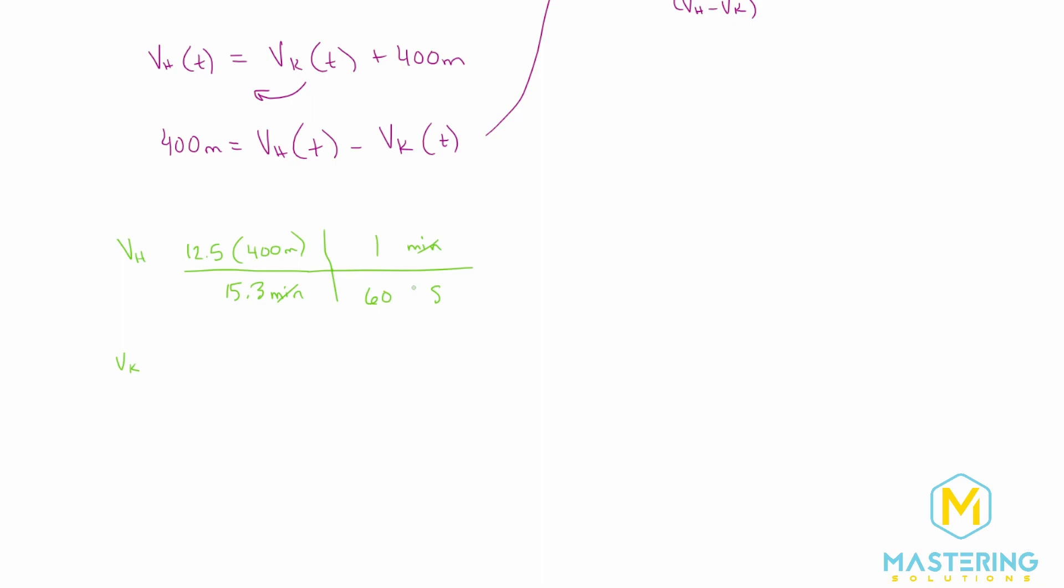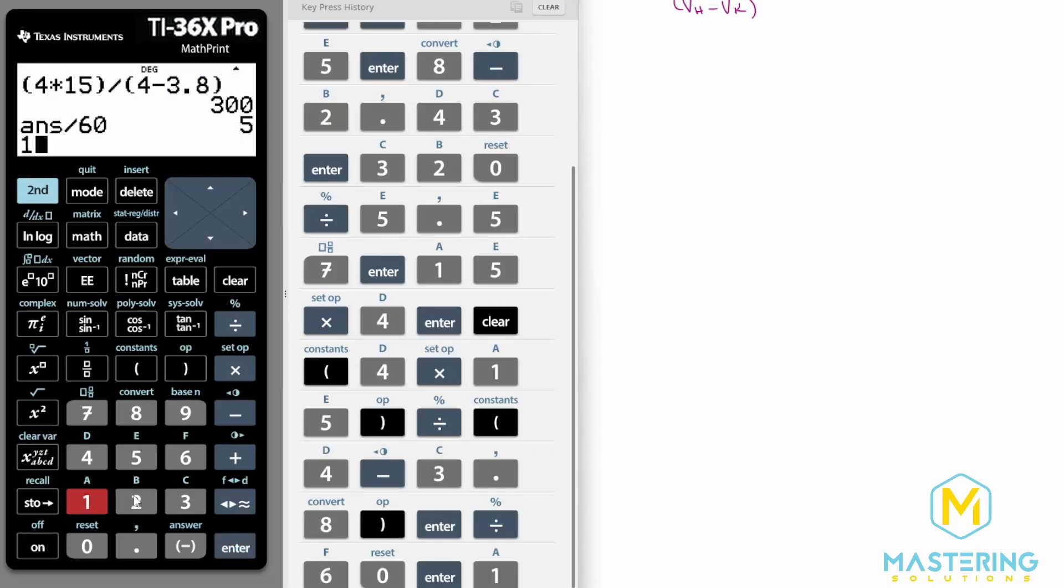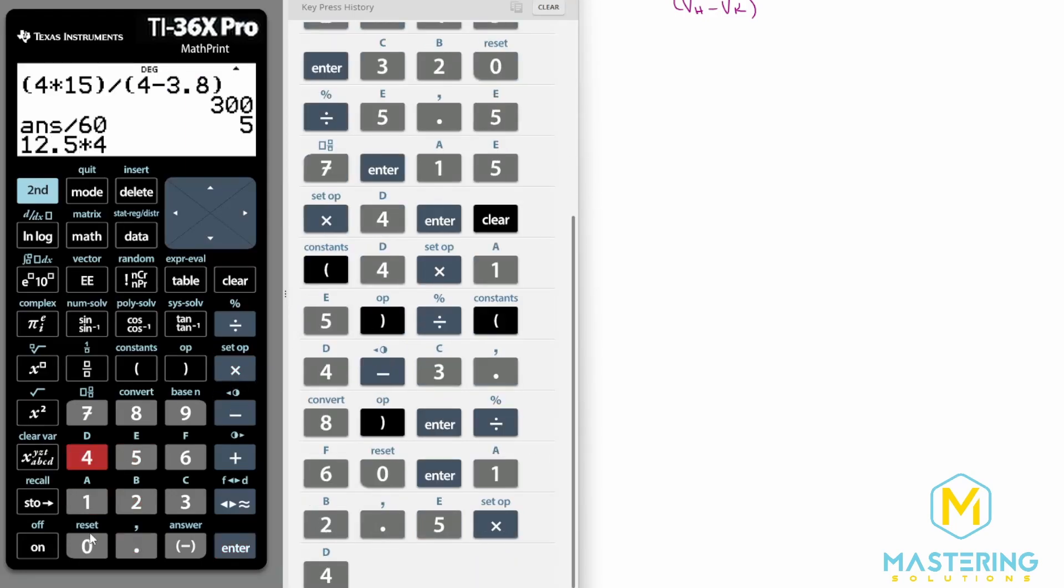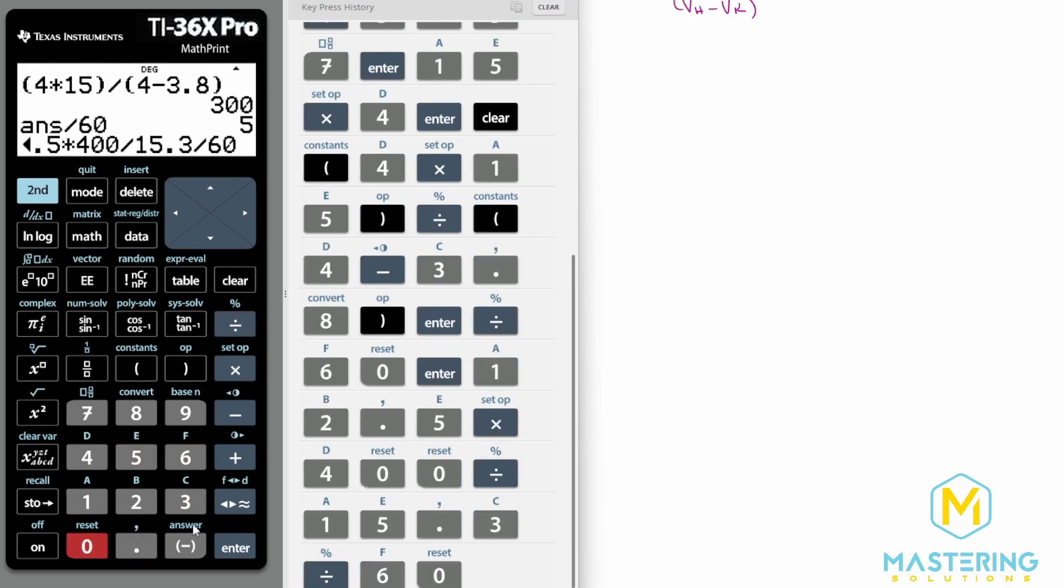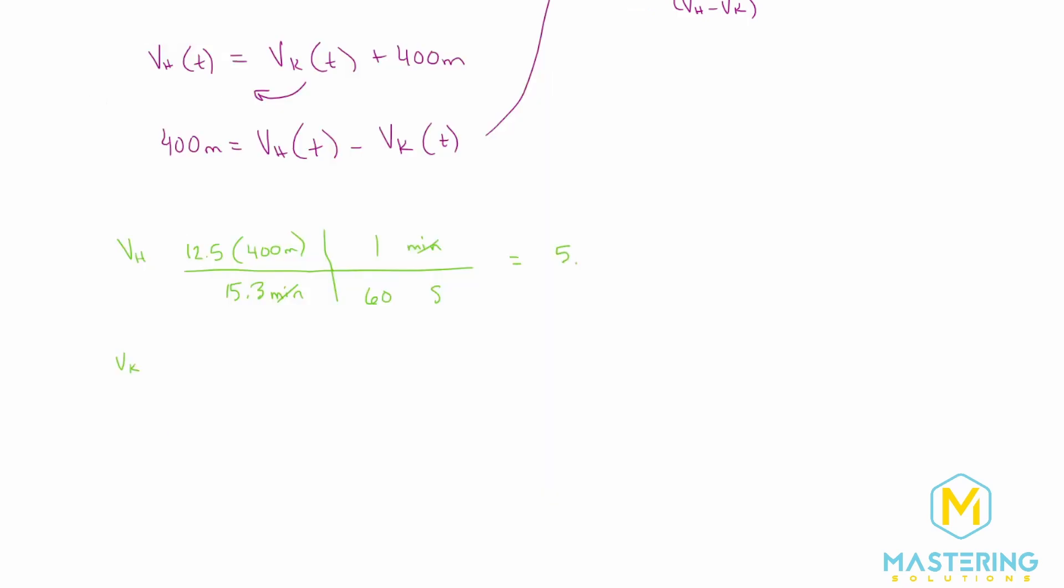So now if it's on the top, we multiply it. If it's on the bottom, we divide. So we have 12.5 times 400 divided by 15.3 divided by 60, which tells us that Hannah ran the race at 5.45 meters per second. So Hannah's speed was 5.45 meters per second.